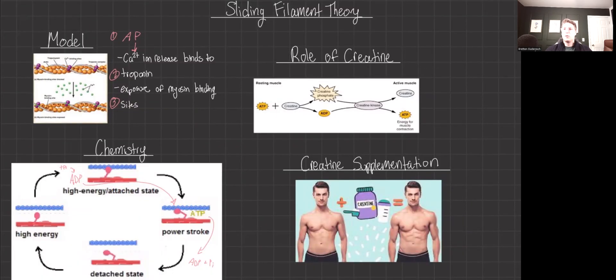The sliding filament theory, coupled with the biochemical process of ATP regeneration and the role of creatine, offers a comprehensive view of how muscles contract and sustain activity. For the bio-biochem section of the MCAT, a deep understanding of these processes is crucial, not just for exams, but for future careers as a doctor.